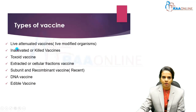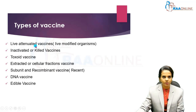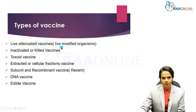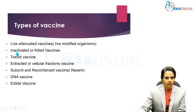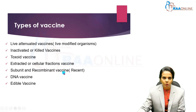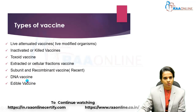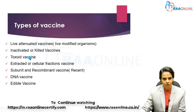Moving on to the types of vaccines. There are various types: first, live attenuated vaccine, which contains live modified organisms; next, inactivated or killed vaccine; toxoid vaccine; extracted or subcellular fractions vaccine; subunit and recombinant vaccine, which are recent vaccines; and new approaches including DNA vaccine and edible vaccine.